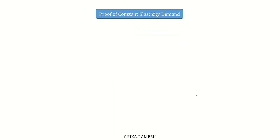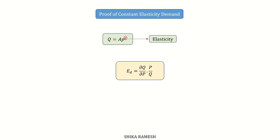A simple proof of constant elasticity demand is presented here. We have already seen the exponential form q = a · p^ε, where ε is the elasticity of demand. We know the formula for elasticity of demand is (∂q/∂p) · (p/q). Now, substituting this equation into the formula for elasticity of demand, we get the equation as such.